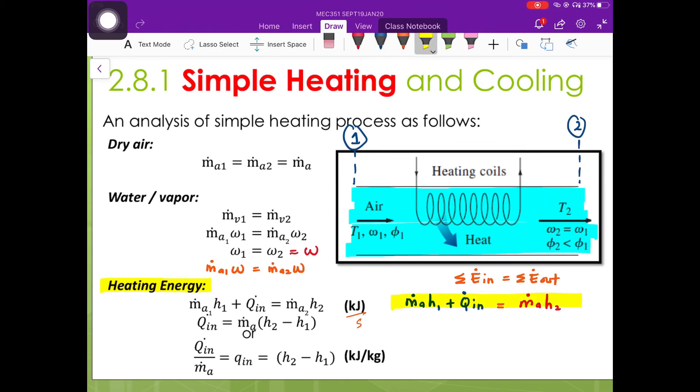If we rearrange this equation, we are going to get the heat transfer rate into our system is equal to the mass flow rate of the dry air times the enthalpy at the outlet minus the enthalpy at the inlet. This equation will give us the unit of kilojoules per second or kilowatts.